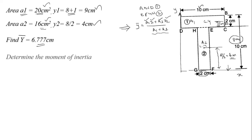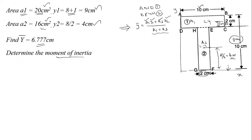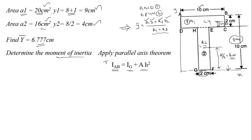Now apply the parallel axis theorem to calculate the moment of inertia of the given section. The formula is I = IG + AH². This is the total moment of inertia of the section, where IG is the moment of inertia of each sub-section, A is the area, and H is the distance between the CG of the section and the CG of each rectangle.